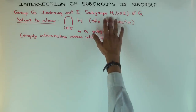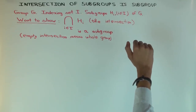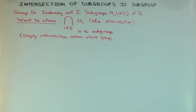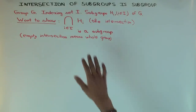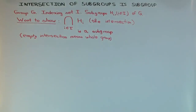Let's say all of these are subgroups of G. What I want to show is that if I take the intersection of all of these — meaning I'm looking at elements of the group which are in each of the sets — an element is in the intersection if it is in every subgroup. I want to show that this intersection is also a subgroup of G.